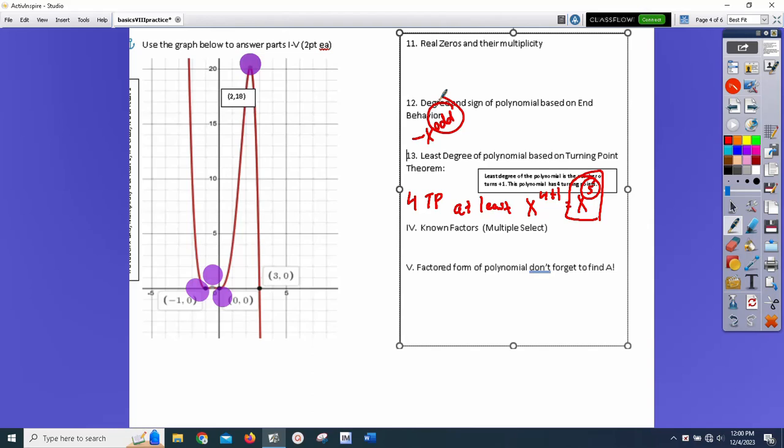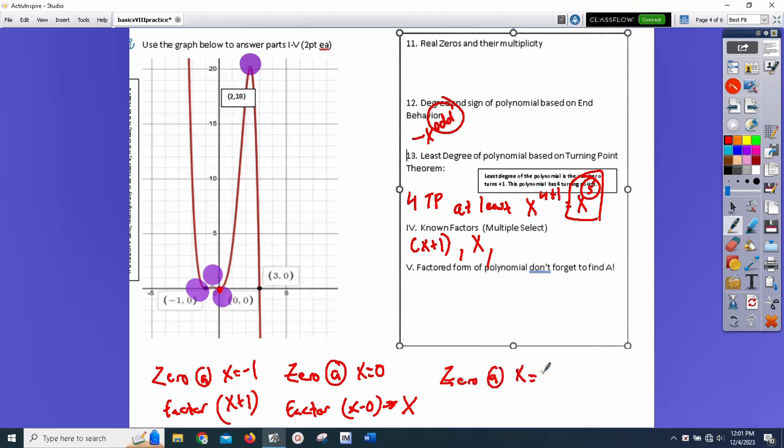Now, we have known factors. This comes from the zeros. We had a zero at x equals negative one. The factor is going to be x plus one. So, x plus one is a factor. We have a zero at x equals zero. The factor, nobody writes it like this, but you guys, a couple of you are going to think, oh, it's x minus zero. It's just x. It's x. But it happens twice. Now, do remember multiplicity. This one, this x plus one was twice, but I'll talk about it in a second. So, x is a factor. And lastly, we have a zero at x equals three. So, the factor is x minus three.